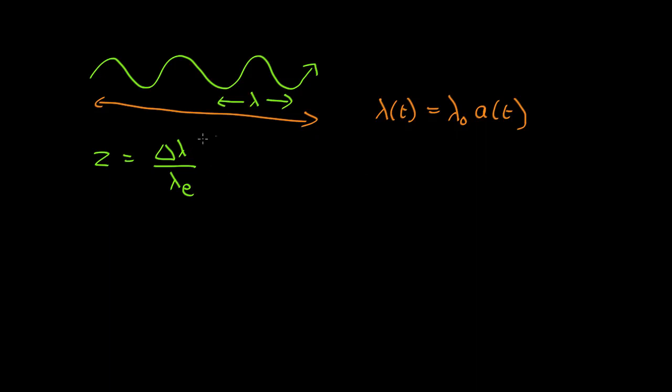So let's put that into here. The redshift is equal to the change of wavelength, which is the wavelength now minus the wavelength when the light was emitted at some time t, which is lambda t, which is lambda nought a of t, all divided by the wavelength that it was emitted, which once again is lambda nought a of t.